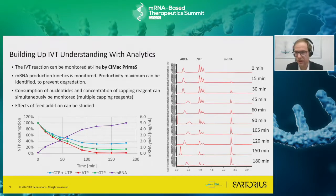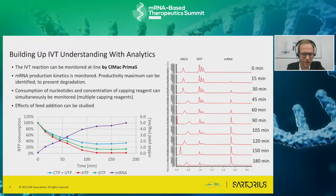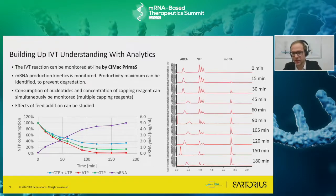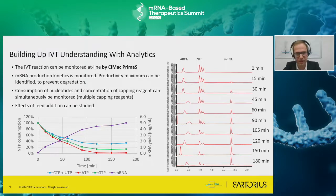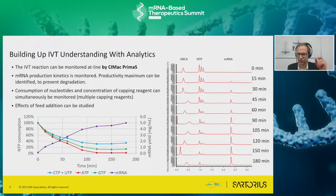If you run a very standard IVT protocol, using the analytical CMAC PRIMA S you can track the reaction at any time point. The readout time is about three minutes, so in principle with one system you could run analysis every three minutes and have your reaction profiled very frequently. You can track how your mRNA is increasing and how your NTPs are decreasing - for example, clearly seeing that ATP was the limiting factor once it was consumed and the reaction stopped. This avoids all the pitfalls of endpoint analytics typically performed with RiboGreen or similar.